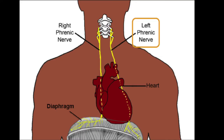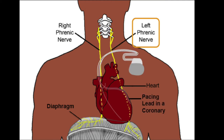The left phrenic nerve courses around the left side of the heart and terminates at the diaphragm. Left ventricular pacing leads are typically placed within a coronary vein on the left ventricle to provide cardiac resynchronization therapy. The nearby left phrenic nerve can be inadvertently stimulated as a result of this therapy.